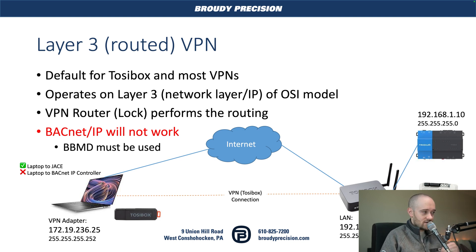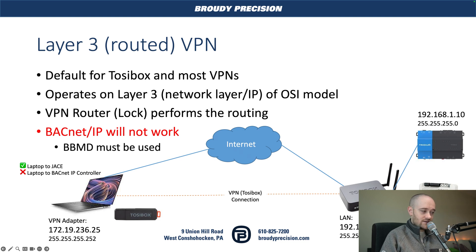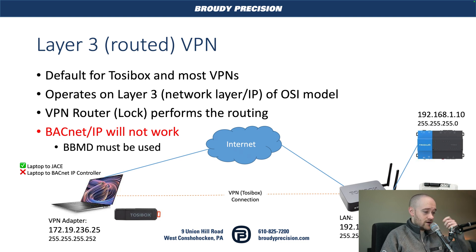So why do we use Layer 3 as the default? One, it allows us to not use IPs that are on that local network at your remote site, so you're not going to use up any of that available IP space. It's just a more efficient way of communicating between the remote device and the network you're remotely trying to connect to. Your VPN router is going to perform the routing — taking your IP address and routing it to the LAN network at the remote site. We'll look at this example, and then switch to Layer 2 on the next slide.